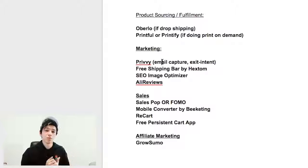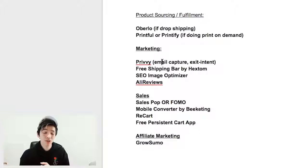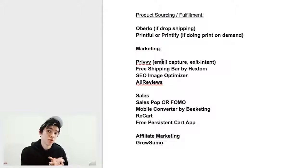Another app for marketing is Ali Reviews — you can import AliExpress reviews into the products you're selling to build customer trust, so shoppers see that others have bought the product. Then there's Sales Pop or Fomo — these show a little popup saying something like 'Johnny from Arkansas just bought this product 10 minutes ago.' It builds customer trust and shows people are active on your site. Some of these apps let you simulate sales if you don't have any yet; others show real-time orders.